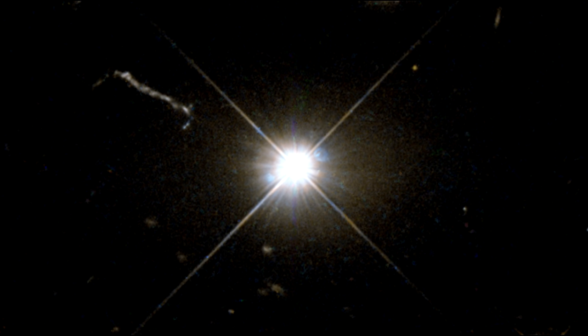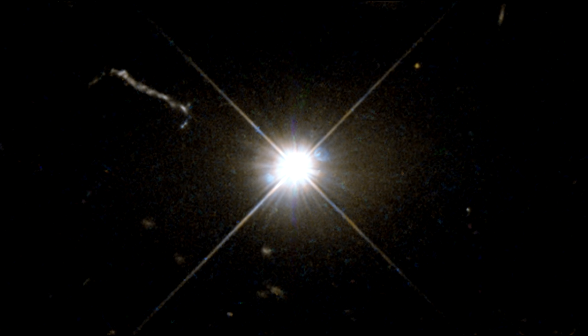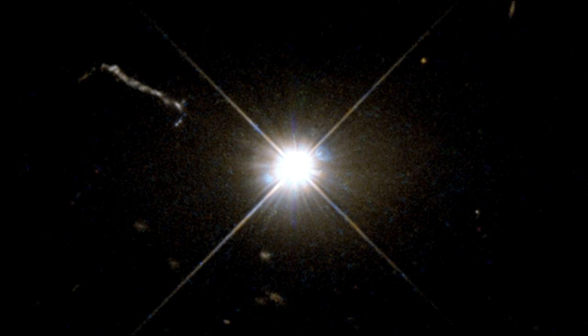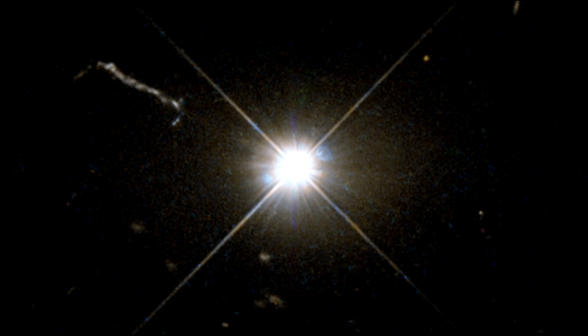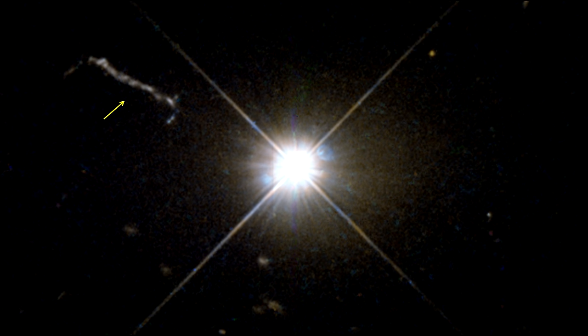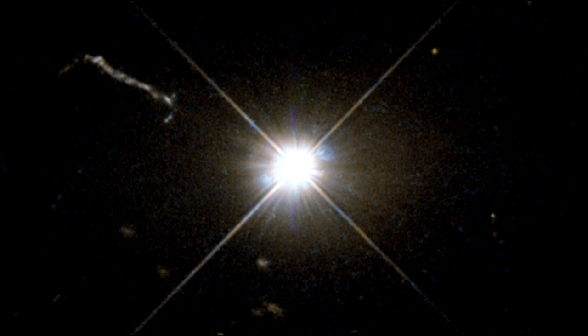As matter from the disk falls inward, some quasars, including this one, have been observed to fire off super-fast jets into the surrounding space. In this picture, one of these jets appears as a dusty streak measuring some 200,000 light-years in length.